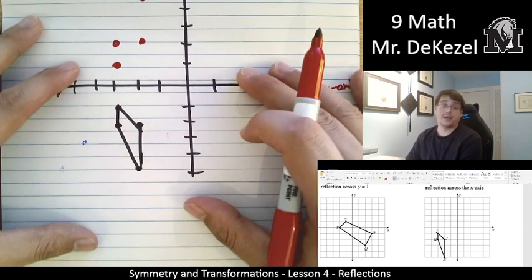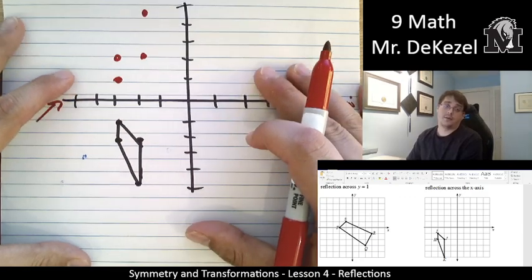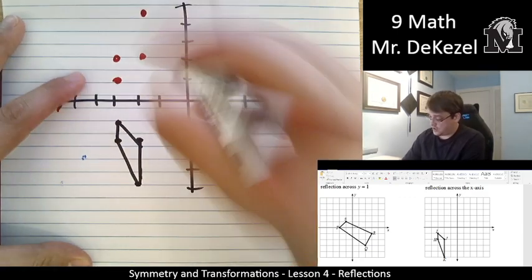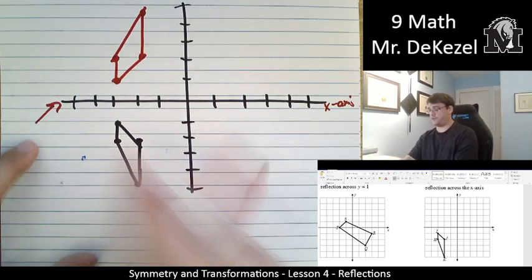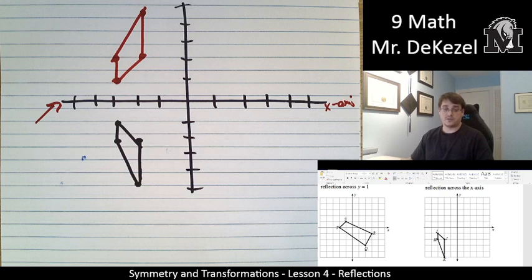We're going to go ahead and connect these dots. So we should get the same shape, just flipped over this line. And yes, we have. If you have any questions about that, please let me know. But whatever line you're flipping it over, you're just counting how many away that point is and doing the opposite in your answer.